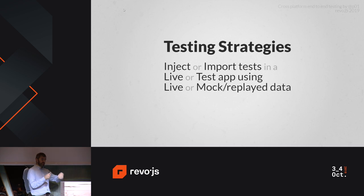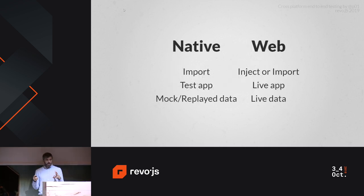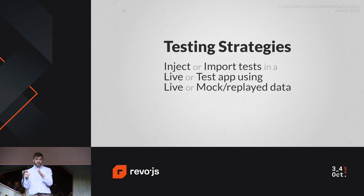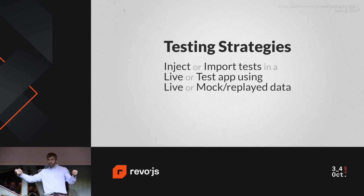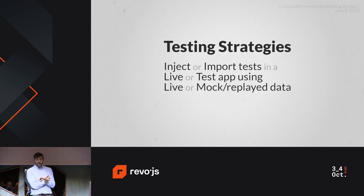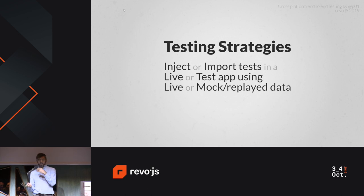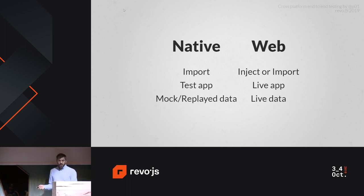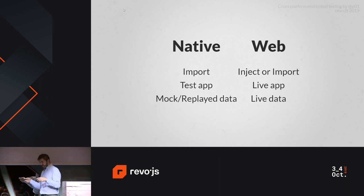The idea to run end-to-end tests is to open an application with a build of your code, run all your scenarios, and request screenshots from the test runner. There are different ways to do this: the test runner can inject the test code into the application, or the application can dynamically import the test as a separate bundle. You can use the live site or a test application, and you can use live data, mock data like JSON files, or a replay of previously captured network traffic.